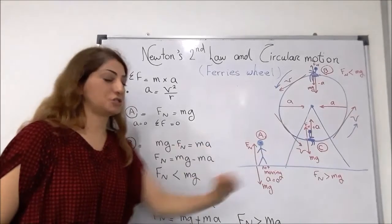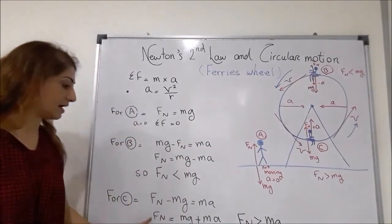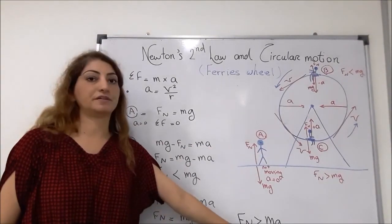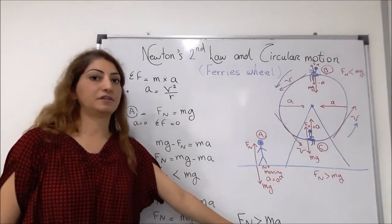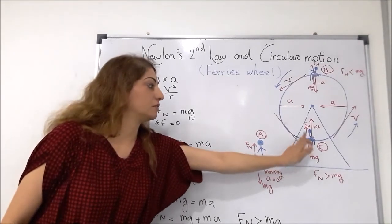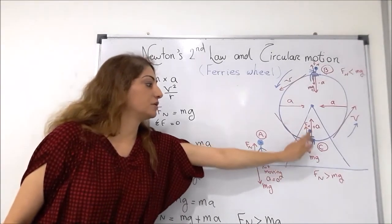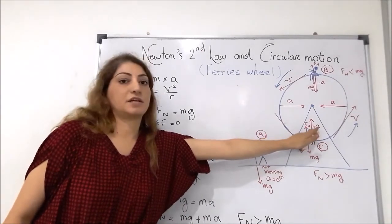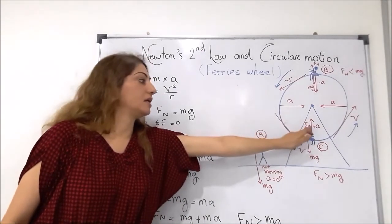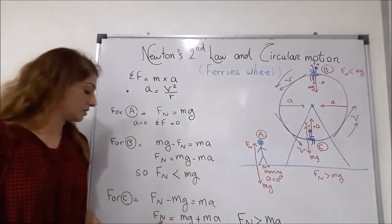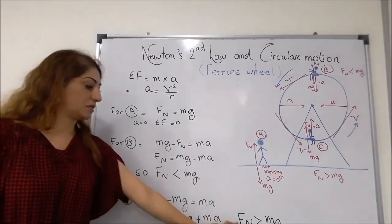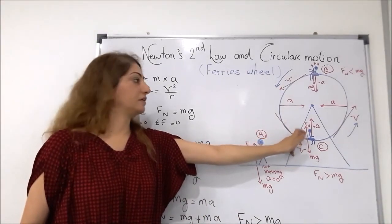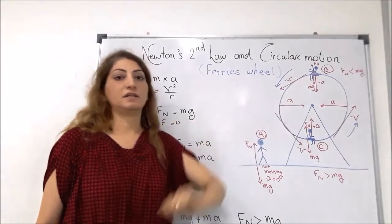For person C at the bottom position, the net force means the normal force is much greater than the weight of the person. Because the acceleration is directed upward — in the positive direction — the normal force is much greater than the weight here, whereas at the top it was less than the weight.